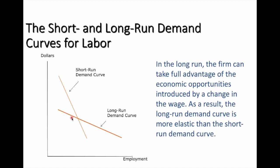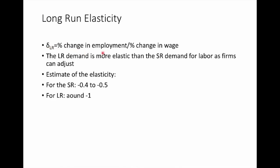That is the common reason why when we calculate the elasticity of demand between short-run and long-run for workers, we find the following observation. Empirical estimates show a range where in the short-run, elasticity ranges from 0.4 to 0.5 — indicating inelastic demand for workers — while in the long-run, it is around one, indicating unit elastic demand.